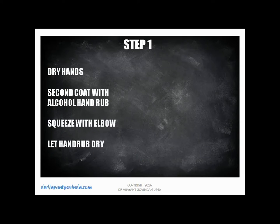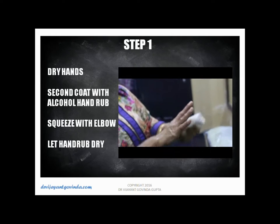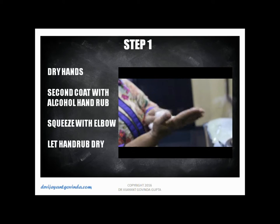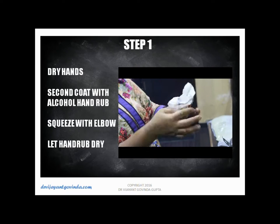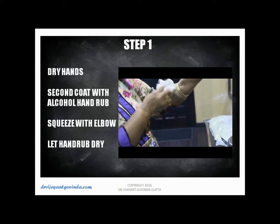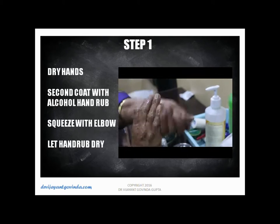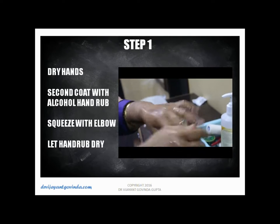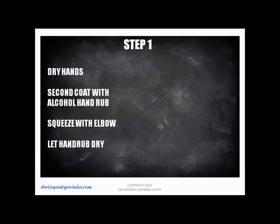After drying, apply a second coat of alcohol hand rub. It is essential that the alcohol hand rub dispenser is squeezed with the elbow, not pressed with the hands, to avoid re-contaminating the hands. Once hands have been washed, the caregiver must not touch hair or any other surface. Allow the hand rub to dry completely — if it has not dried, it will not kill all germs. This is the most essential step.